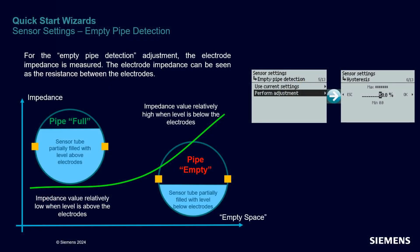The empty pipe detection algorithm is the subject of a short webinar where you can find all the details. At a high level: when a magnetic and conductive medium is present in the pipe between the electrodes, the impedance value measured is relatively low. The opposite is true when the level is low — below the level of the electrodes — the impedance increases. This behavior is what allows the new algorithm to detect what we call the empty pipe detection.